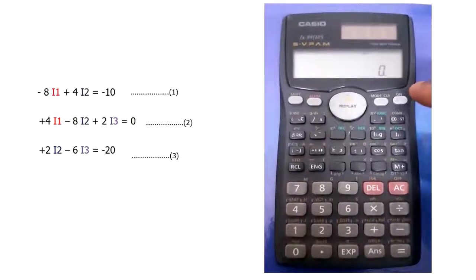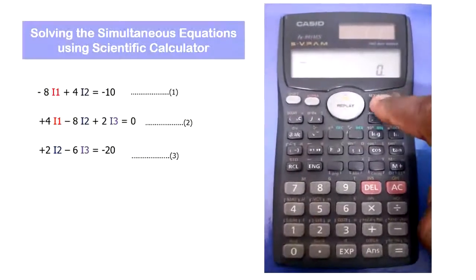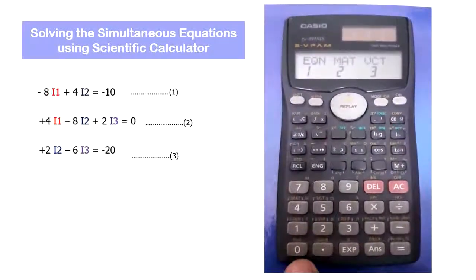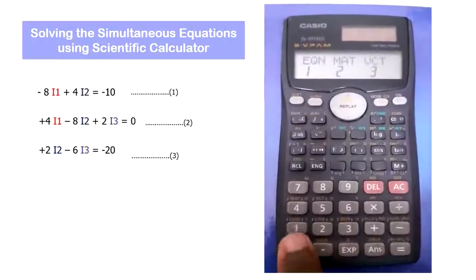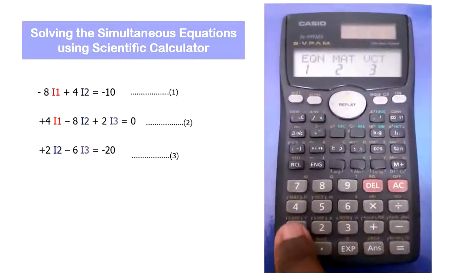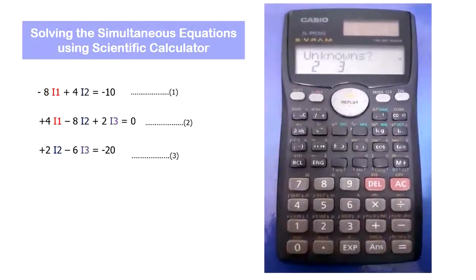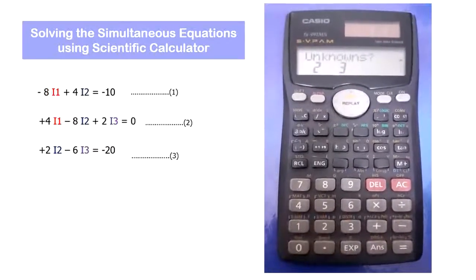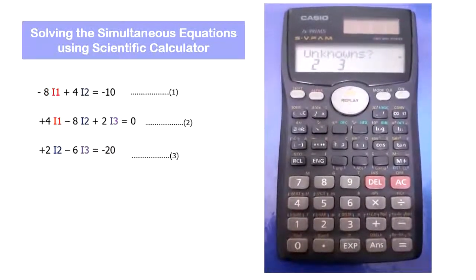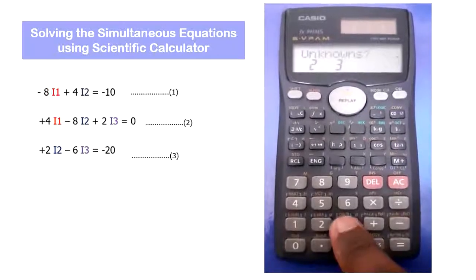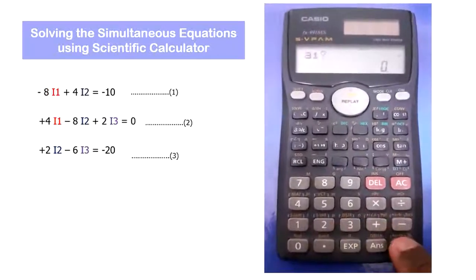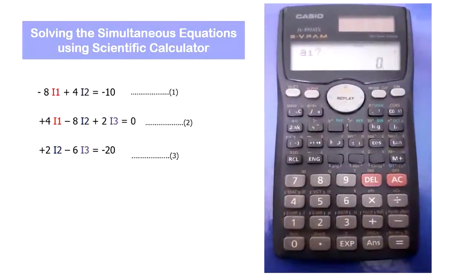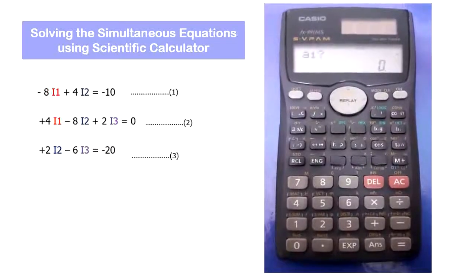In the scientific calculator, if you click on mode thrice, you will get equation. To select that equation, press 1. So it is asking for how many unknowns there are. In our expression, we will be having three unknowns, so select three here. Now it is asking to enter the coefficient values.